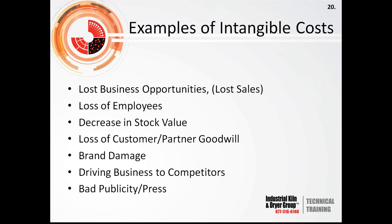Intangible or indirect costs are unquantifiable costs relating to an identifiable source, representing a variety of expenses such as losses in productivity, customer goodwill, or drops in employee morale. Examples of tangible costs include lost wages, lost inventory, repair labor costs, repair material costs, marketing costs, bank fees, or legal penalties from not delivering a product. Intangible costs include lost business opportunities, loss of employees, decrease in stock value, loss of customer goodwill, brand damage, driving business to competitors, and bad publicity.